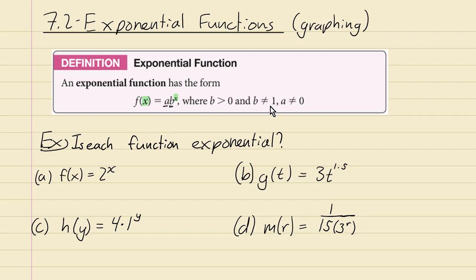We'll see why in a minute. The other number in front, the coefficient a, must not be zero, because otherwise it would just be f(x) equals zero.